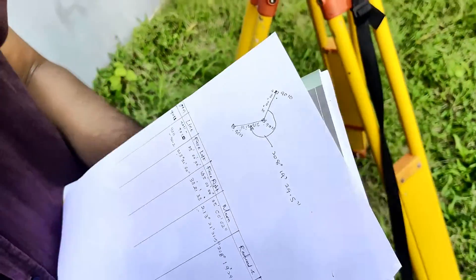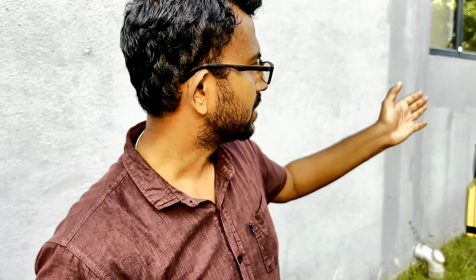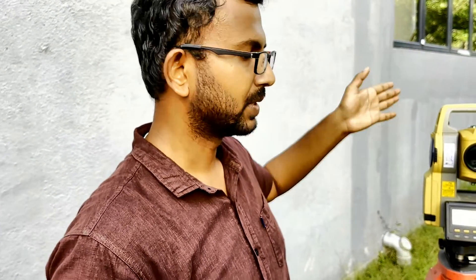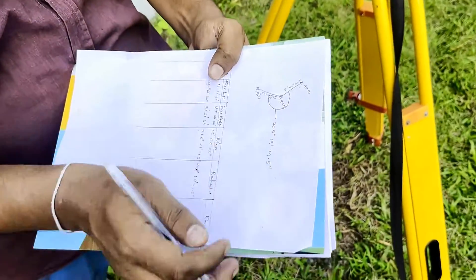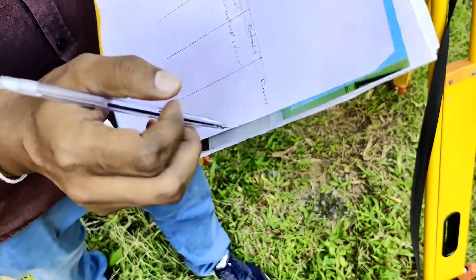The next thing is in the traverse, we need to get the distance. Now you know that this is a control line. Therefore, we don't need to get the distance here because we have coordinates. We can calculate the distance using Pythagoras theorem. But in this line, let's assume that this is not a control line. This is somewhere, this is a traverse station. In that case, we need to find out the distance from 9011 to 9012.